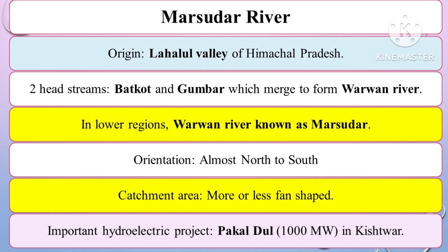The Marusudar River originates from the Lahaul Valley and has two head streams: Bakot and Gumbar. In the lower regions, it is known as the Varwan River, and later as Marusudar. An important hydroelectric project on this river is Pakal Dul.